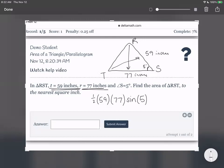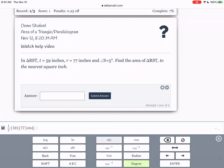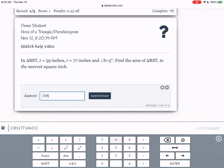So over here, let's take that away. We're going to do one half, 59 times 77 times sine of 5. And it gives me 197.97. We are going to round that to the nearest square inch. So that's 198. Any questions? All right. I'm going to submit answer.